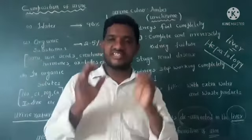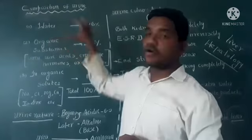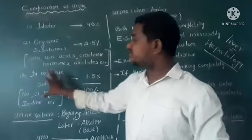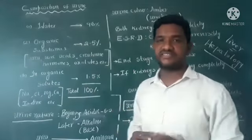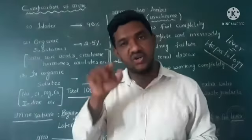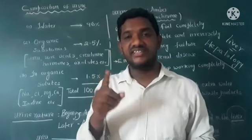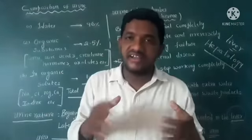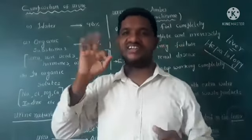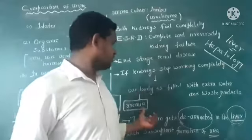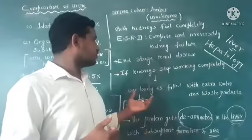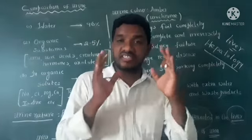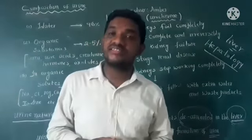Urea is formed in the liver. To recap the key points: the components of urine are water at 96%, organic substances at 2.5%, and inorganic solutes at 1.5% — total 100%. The color of urine is amber or yellow, due to the pigment urochrome. ESRD means End Stage Renal Disease. Uremia is when the body is filled with extra water and waste products due to kidneys stopping completely. The study of the liver is called hepatology.